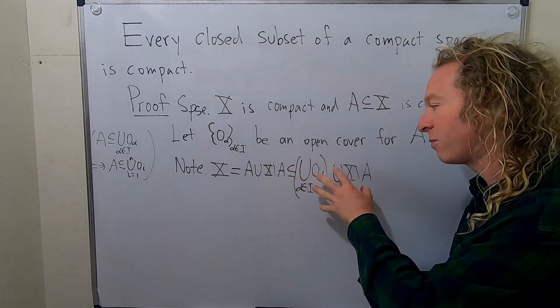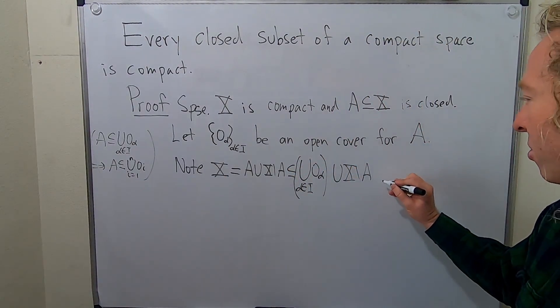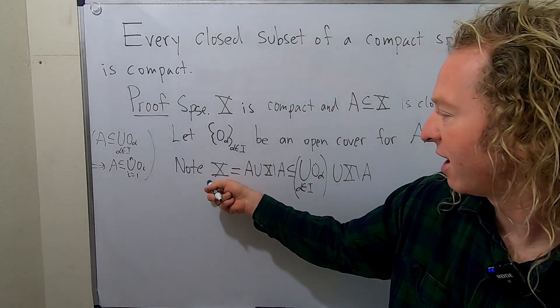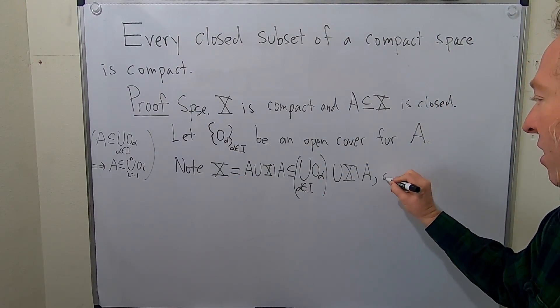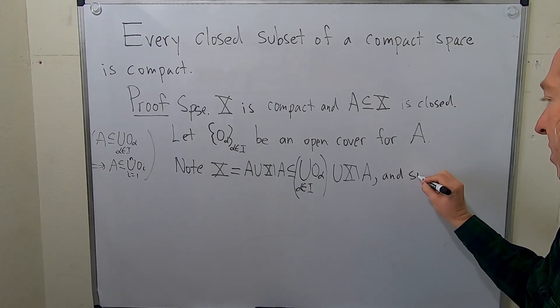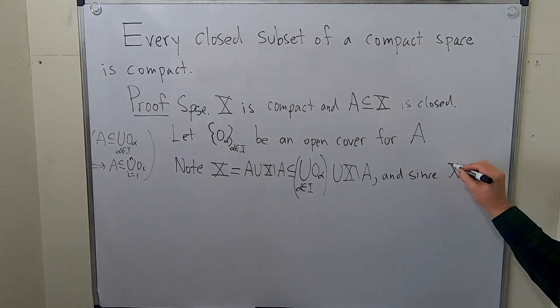But X is compact. So there exists a finite sub cover of these elements. So let me just write that down. So we have that X is contained in this.